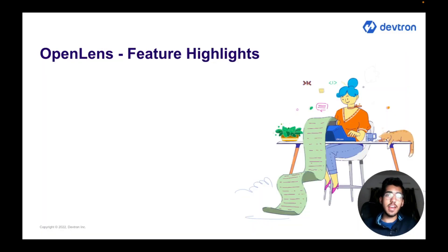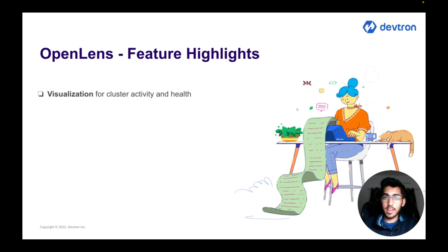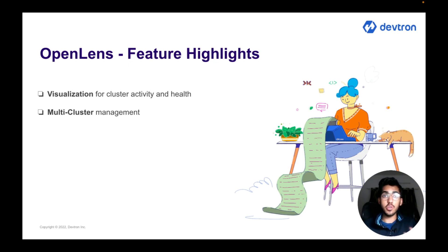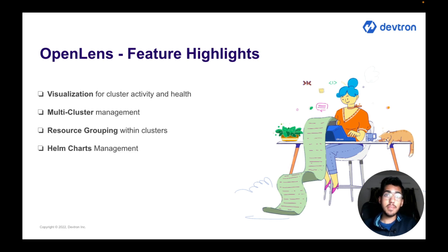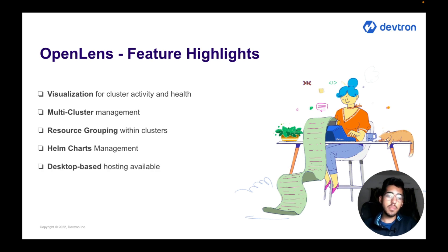Now let's have a look at some of the feature highlights that OpenLens provides. It gives you the ability to visualize cluster activity and health. You can work and manage your apps under a multi-cluster architecture. OpenLens also gives you functionality for resource grouping within clusters. You can easily manage your Helm chart deployments from the application itself, and it is desktop-based, so the app is available to download on your local machine.